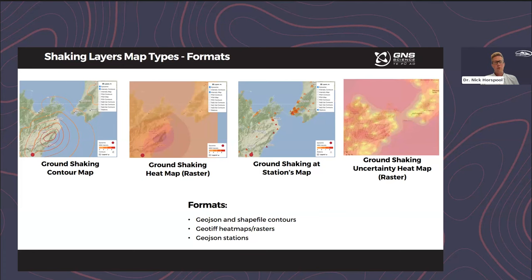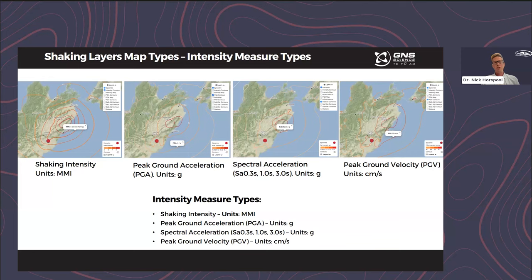In terms of formats, we output in a number of different open geospatial formats. GeoJSON as well as an alternative shapefile for contours. For heat maps and rasters, we produce these as GeoTIFFs, and station data as GeoJSON as well. Each map type is produced for a number of different shaking intensity measure types. Most commonly people will be familiar with MMI — the Modified Mercalli Intensity Scale, which ranges from 1 to 10. We also produce engineering-based parameters such as peak ground acceleration in units of gravity, spectral acceleration at periods such as 0.3 second, 1 second, and 3 seconds, and peak ground velocity measured in centimetres per second.